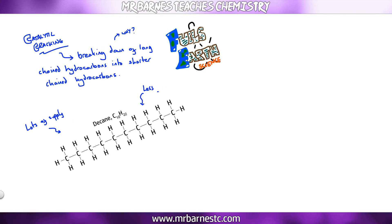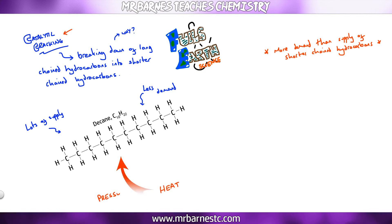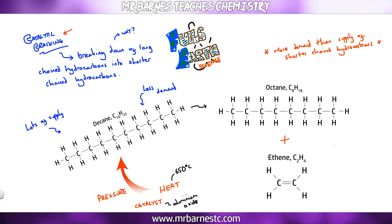We don't need the large ones as much, but for smaller ones like ethene (C₂H₄), we have more demand than supply — we don't have enough of them. So we carry out catalytic cracking: we heat our decane to 650°C, apply pressure, and use a catalyst — aluminium oxide. This breaks those long-chain hydrocarbons down into shorter-chain ones, producing a shorter-chain alkane and a shorter-chain alkene, meeting our demand for the shorter-chain hydrocarbons.